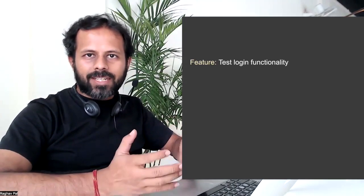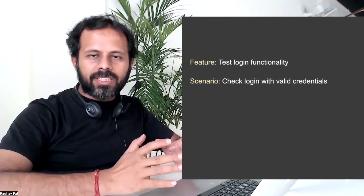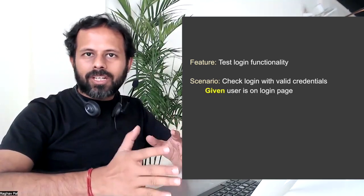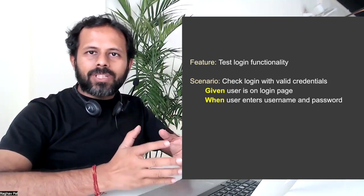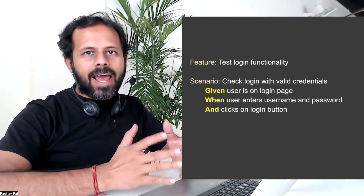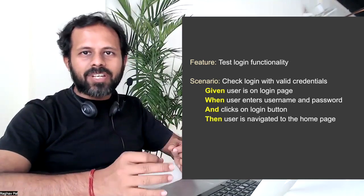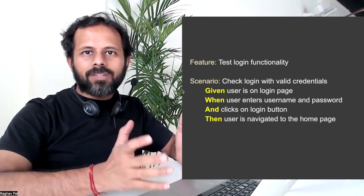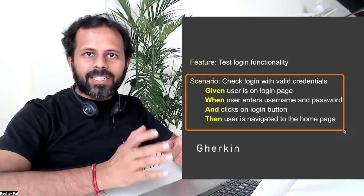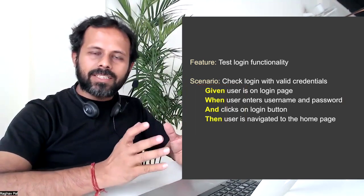For example, if I have to test a login scenario and write this in the form of BDD feature files, I will say: given user is on login page, when user enters username and password and clicks on the login button, then user is navigated to the homepage. So this is a very simple scenario where we have used the Gherkin keywords given, when, and then, and we have created a BDD scenario.